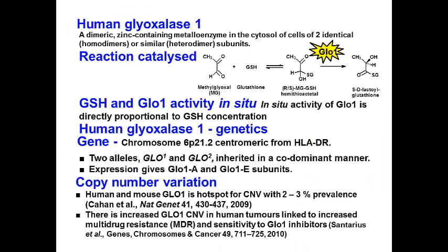Human glyoxalase 1 is a dimeric zinc metalloenzyme in the cytosol of all cells, composed of two equal monomers in homozygotes and also two slightly different subunits in heterozygotes. The reaction catalyzed involves the isomerization of the hemithioacetal formed non-enzymatically from methylglyoxal and glutathione, which is isomerized to S-D-lactylglutathione.